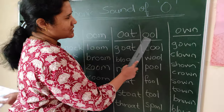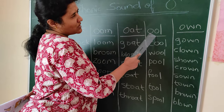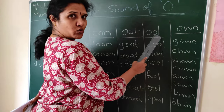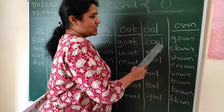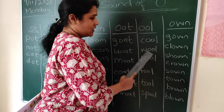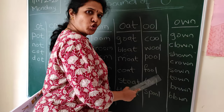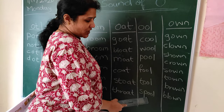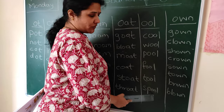Now next sound: OOL. You should say it as OOL — not pool, OOL. C-O-O-L — COOL. W-O-O-L — WOOL. P-O-O-L — POOL. F-O-O-L — FOOL. T-O-O-L — TOOL. SP — what is the sound of SP? SP plus OOL is SPOOL.